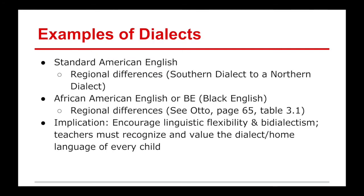Other challenges with dialects include regional differences. Even within standard American English there might be different places in the U.S. or globally that have different dialects — it's still American English, but with a different flavor. One thing discussed in Otto is African American English, or Black English. It still is standard American English, but there is a specific dialect, and it causes challenges in the classroom when we look at where teachers and students fall on the continuum in use of these dialects.